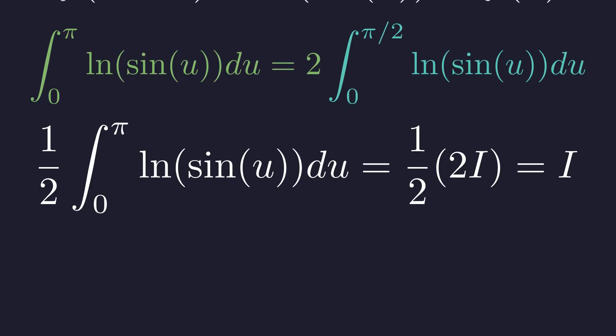So, our entire expression simplifies beautifully. The integral of natural log of sine of 2x from zero to pi over 2 is miraculously equal to i.